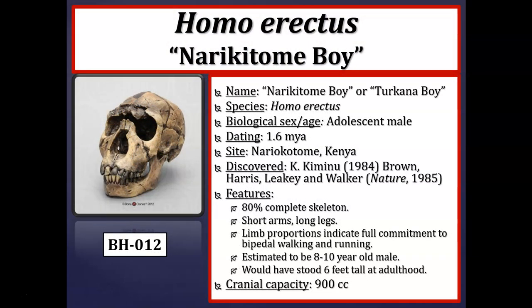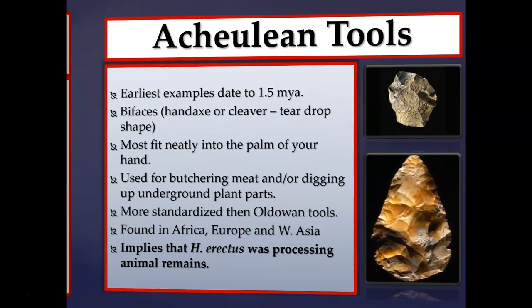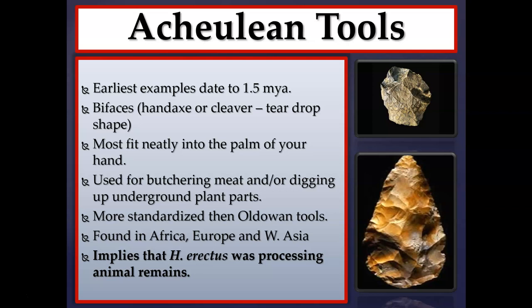Nariokotome Boy is another fossil attributed to Homo erectus or Homo ergaster, dating to about 1.6 million years ago from Nariokotome, Kenya. Paleoanthropologists recovered about 80% of the skeleton, determining bipedal locomotion from relatively short arms, longer legs, and longer angled femurs. This individual was approximately 8 to 10 years old at death — pre-adolescent male — and would have stood about six feet tall at adulthood. Cranial capacity is approximately 900 cc's, within the expected Homo erectus range.